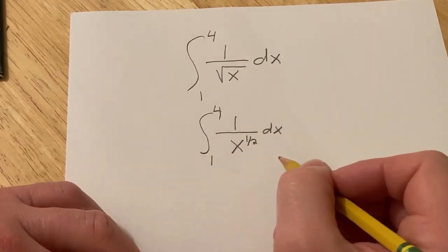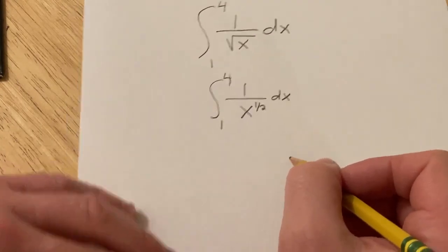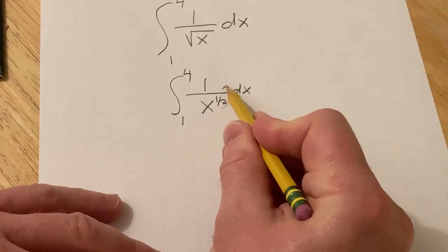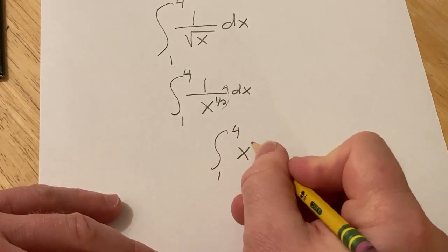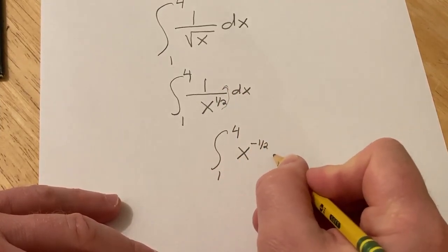And again, we're not in a place yet where we can integrate this. So what we're going to do now is we're going to bring this upstairs. So this is 1 to 4, x to the negative 1 half, and here we have the dx.